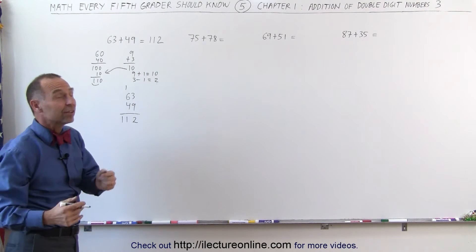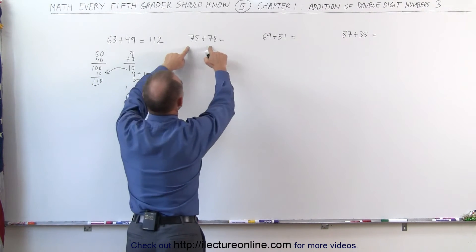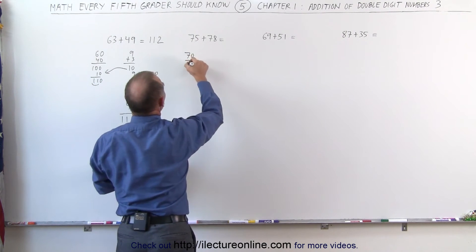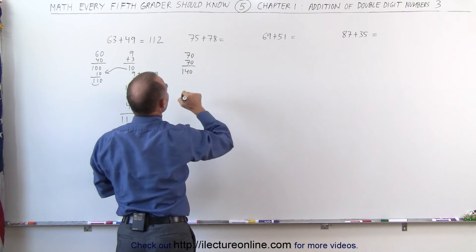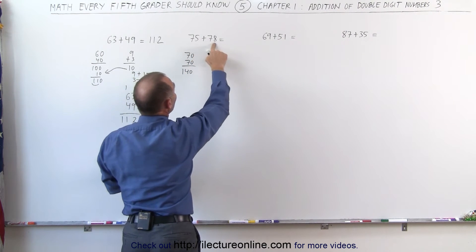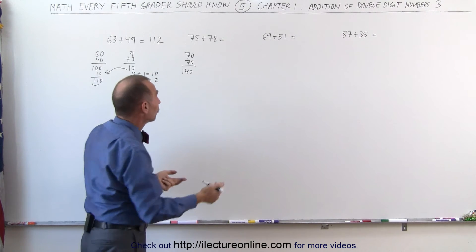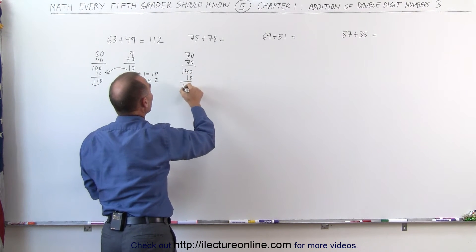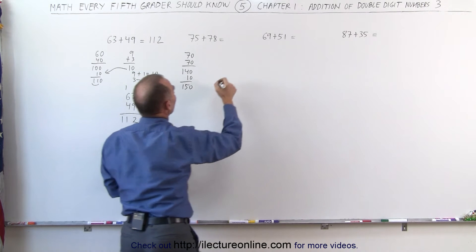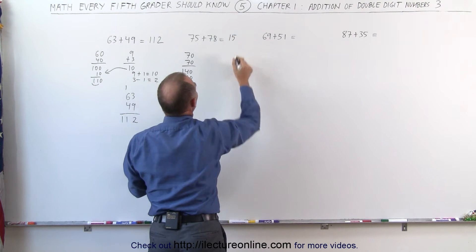Let's try it over there and see if this technique works. Add the first two numbers together. 70 plus 70 gives me 140. Now I know that 5 plus 8 will add up to more than 10. So I add another 10 to that. That gives me 150. And I write the first two numbers down. 1 and 5.